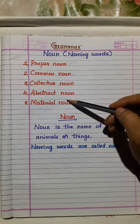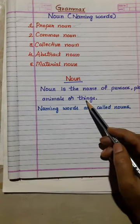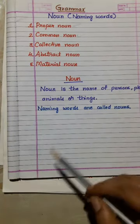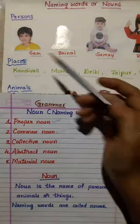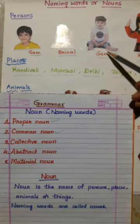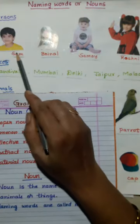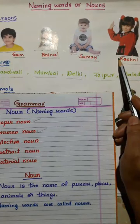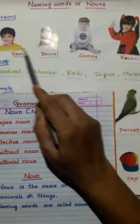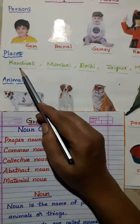Now let's see what a noun is. A noun is the name of persons, places, animals, or things. For example, names of persons: Sam, Brinal, Samai, and Roshni. All these names of persons are called nouns, or naming words.